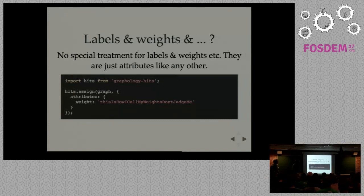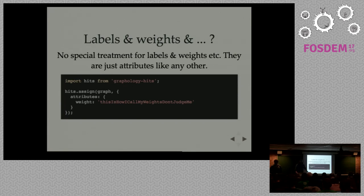The last design point was what to do with labels, weights, and other special attributes common in graph theory. Because graph theory fosters variation in terminology — node vs. vertex, weight vs. cost — we decided those are just attributes like any other. All the library is designed around this, and if you want to use a custom name for your weights, you can provide a configuration and it will work.